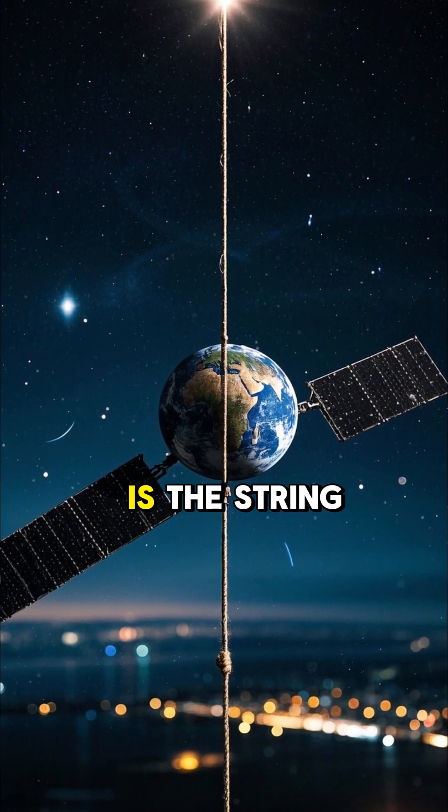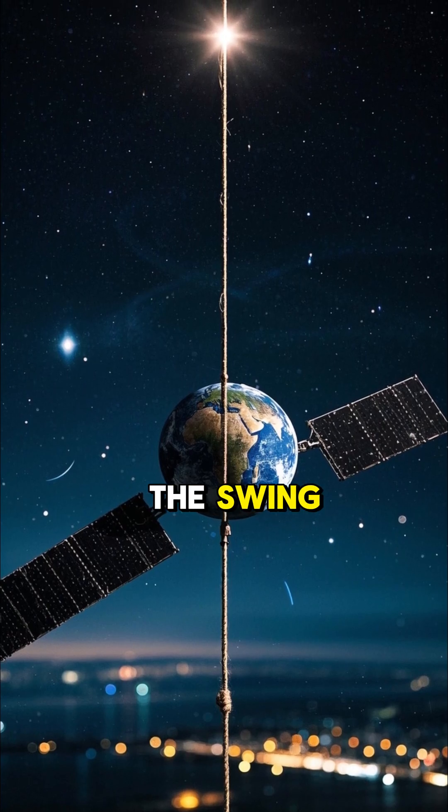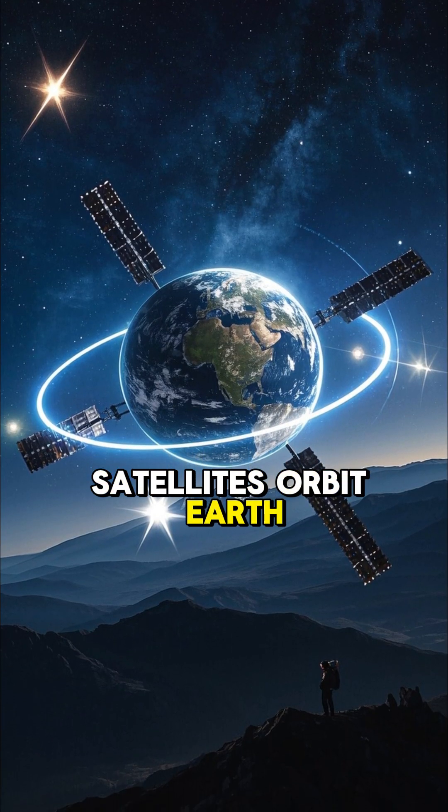In space, gravity is the string, and speed is the swing. And that's how satellites orbit Earth without falling.